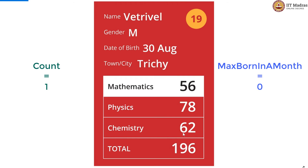We go to the next card and the month changes, which means there has been only one card in the April month. Thus max_born_in_a_month needs to be updated to 1, because 0 is lesser than the 1 in count. So max_born_in_a_month is now updated to 1.